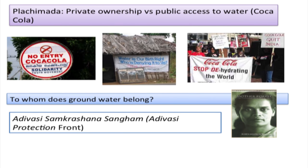The Plachimada case involved a tribal organization led by C.K. Janu. It was related to groundwater depletion of aquifers and leaching of chemicals used to clean bottles. Initially, local people could not get justice because there was no law. Eventually the Kerala government passed the Groundwater Act, through which panchayats could use the act to deny permission to Coca-Cola. This shows that there may be individuals and groups who are for or against certain things, but there needs to be support in the form of institutions, laws, and policies to bring about change. That factory has now shut down.